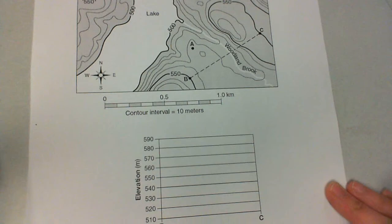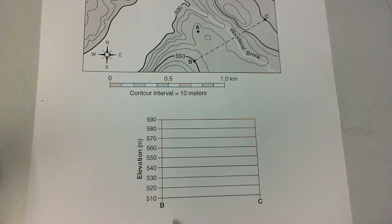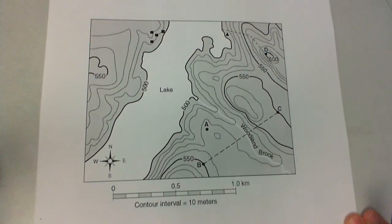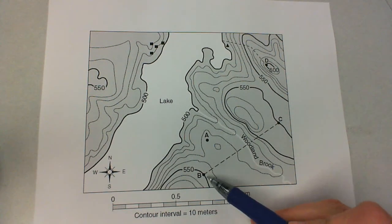If we take a look at the graph itself, we can see that we're looking for a line labeled BC. So when you look at the map, we can see that that is here and here.